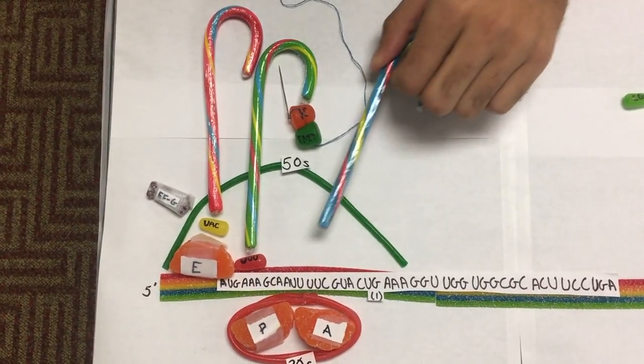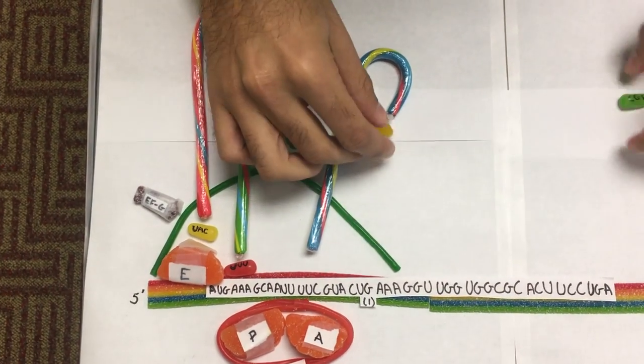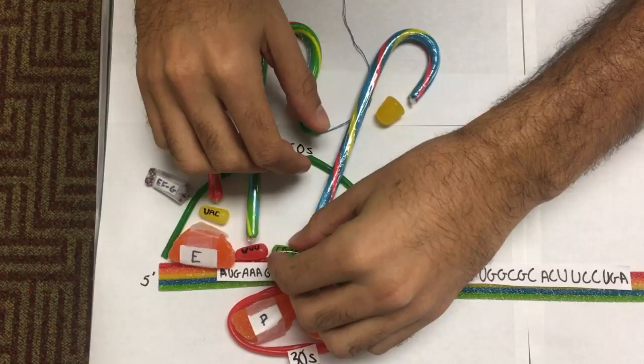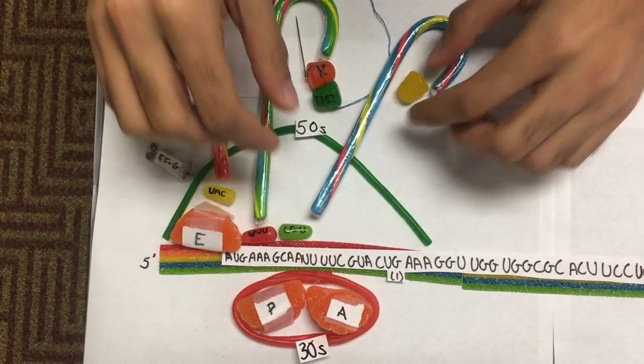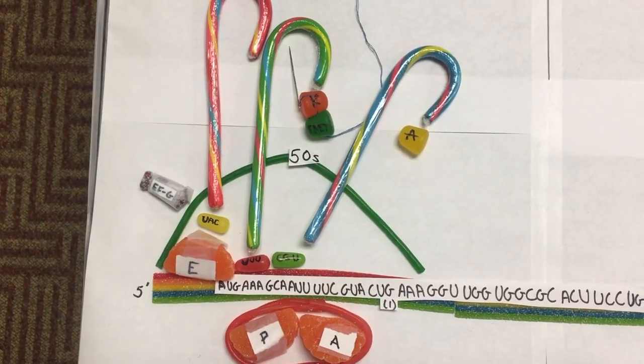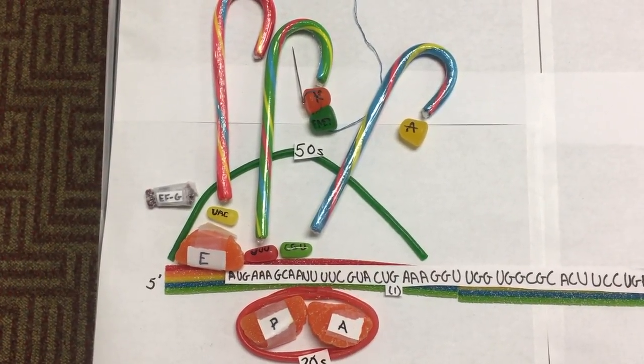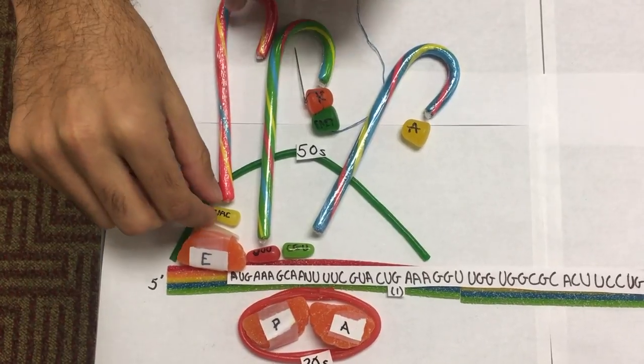Now, a new peptidyl tRNA will come in. This one is alanine. And this one moves into the A site. The final step in elongation is when the deacylated tRNA leaves the E site.